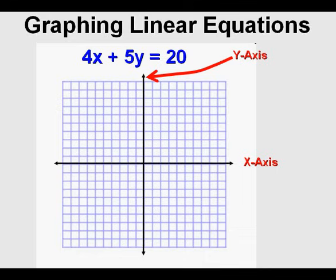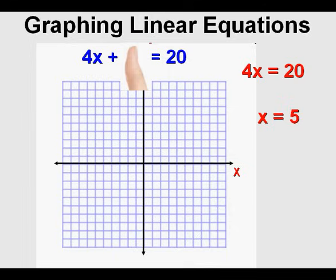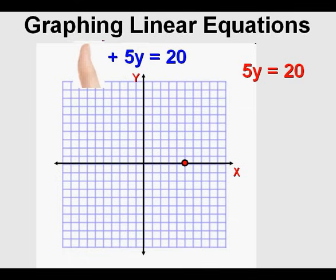The strategy we'll use has us find the x-intercept and the y-intercept, then graph the equation by drawing a line through the two points. We solve for the x-intercept by covering up the y-term — I like using my thumb for that. With the thumb covering the y-term, we have 4x equals 20. We solve for x by dividing by the coefficient of x, which is 4. So 20 divided by 4 equals 5. The x-intercept is 5. Mark the point on the x-axis.